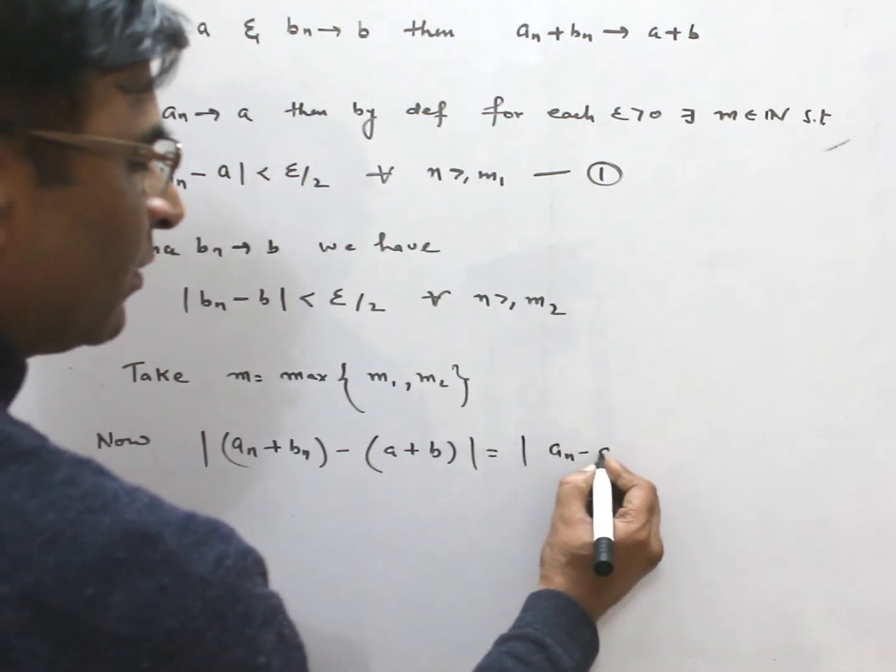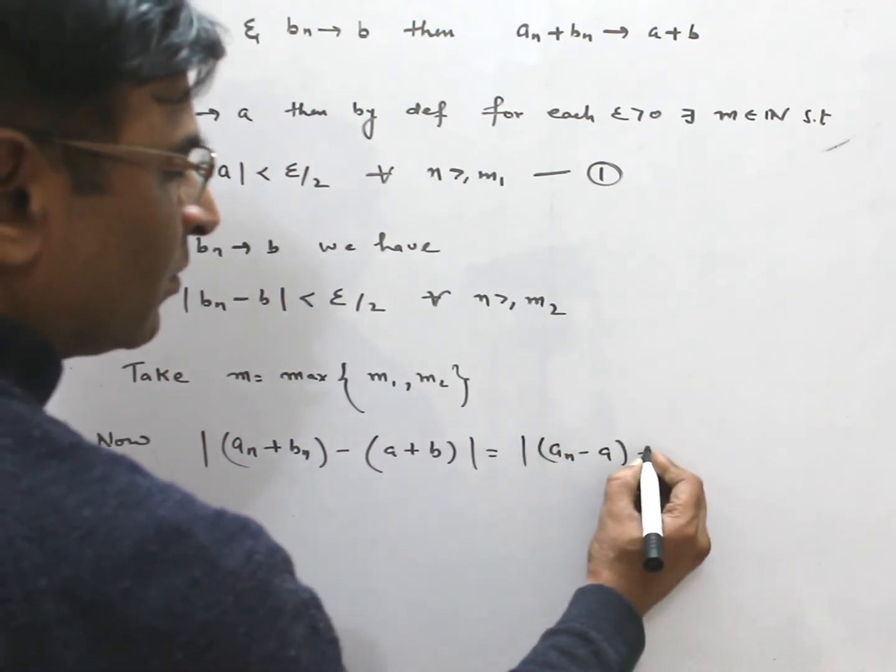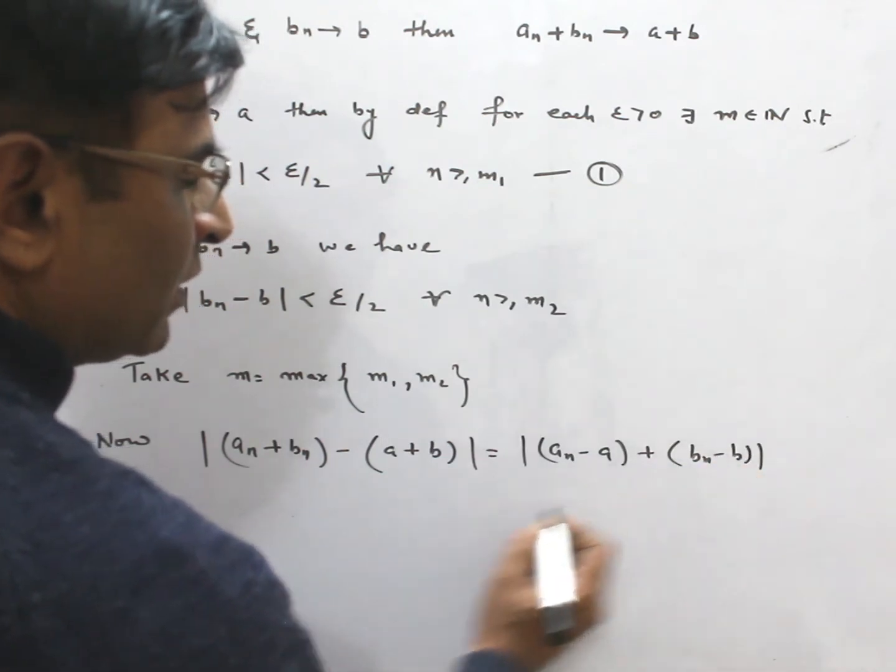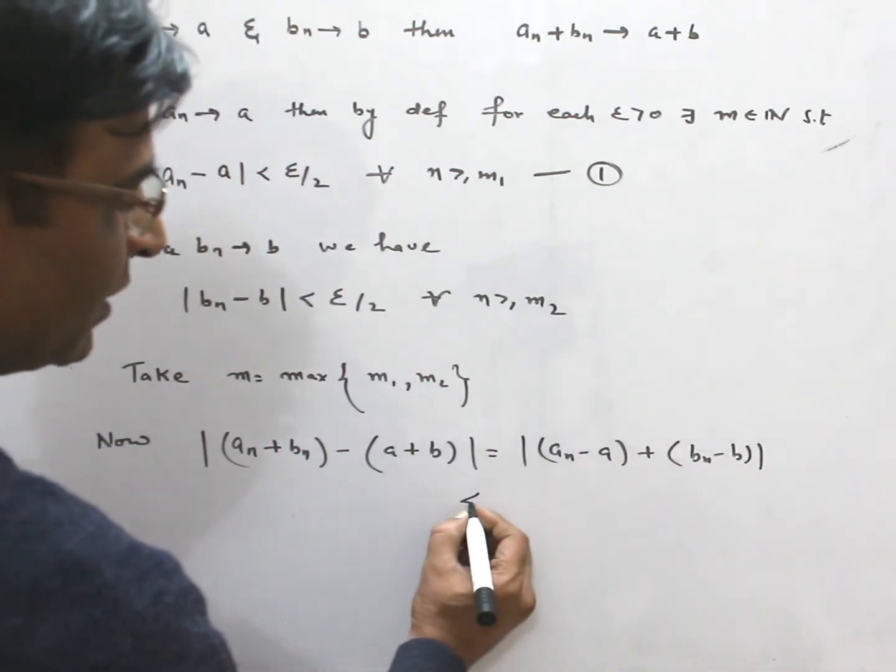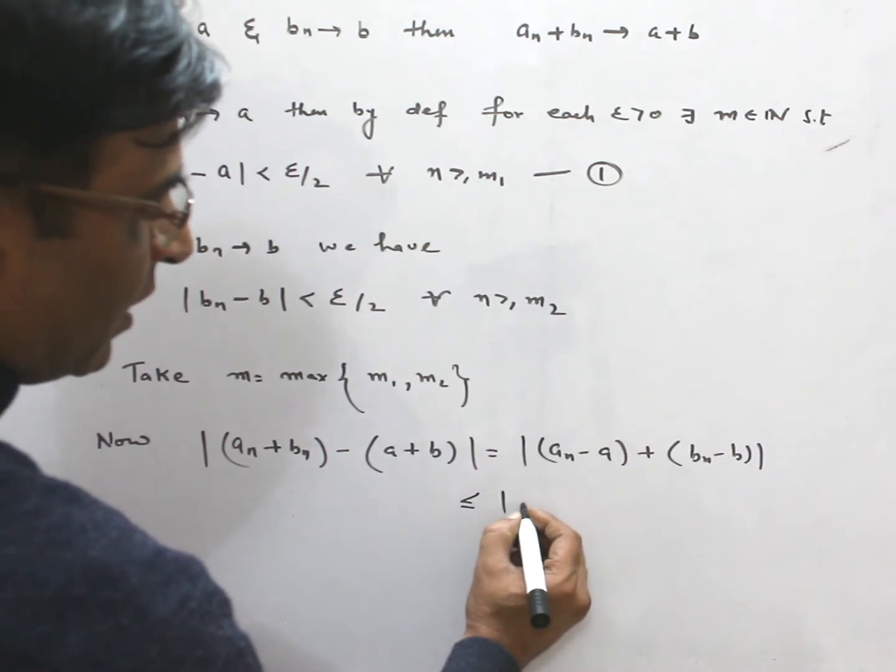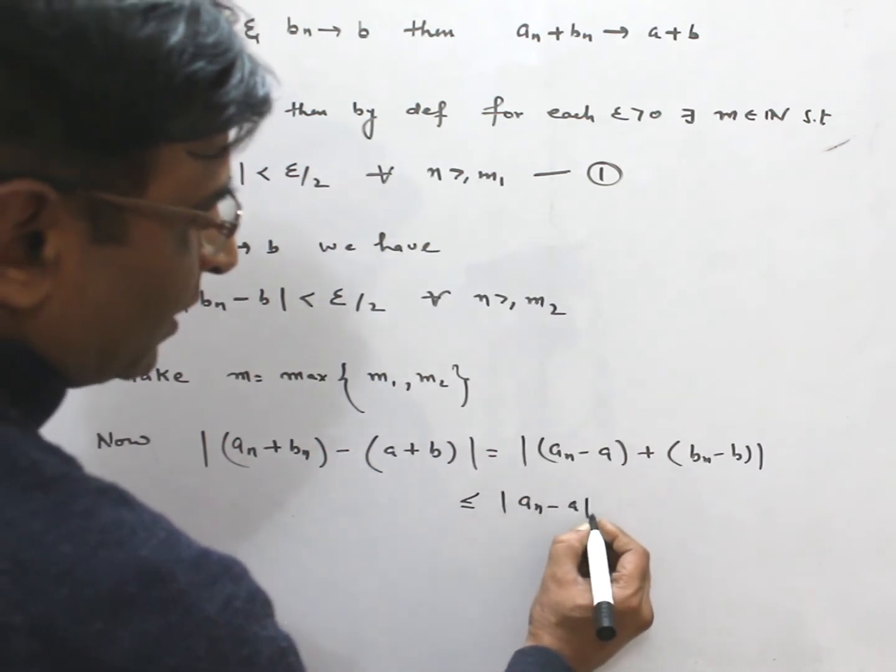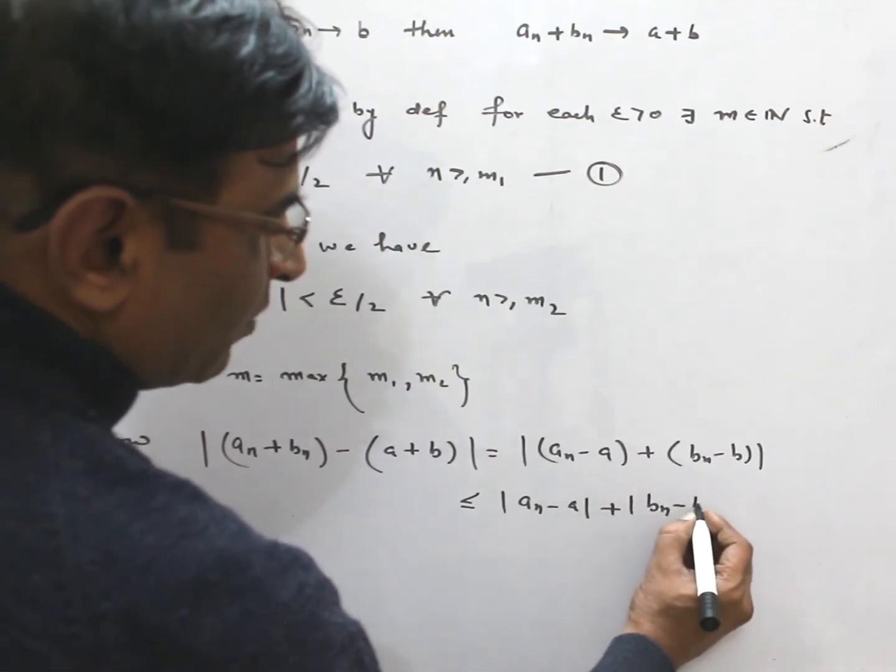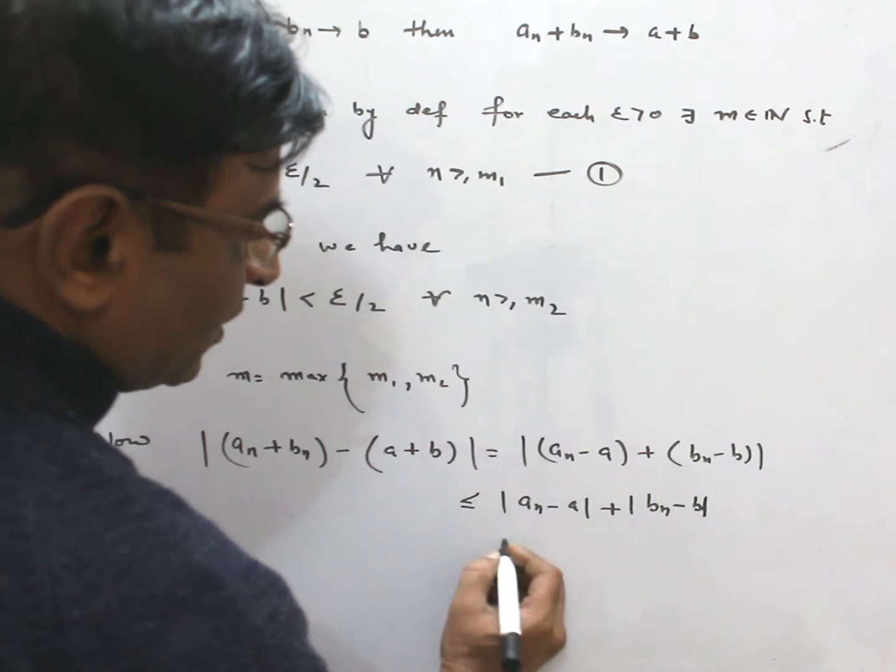Now, absolute value of |(An + Bn) - (A + B)| can be written like this. By triangle inequality, this can be written as |An - A| + |Bn - B|.